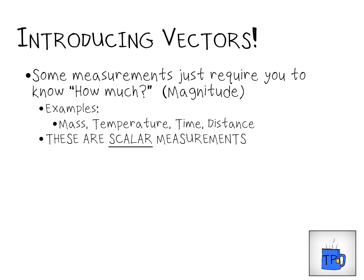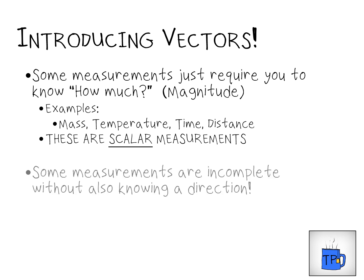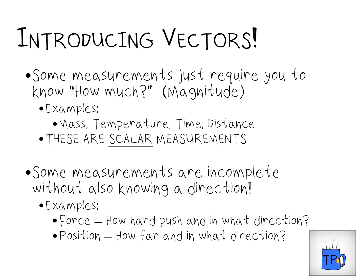However, as the previous example suggested, sometimes it's not enough to just know the measurement — you need additional information in the form of a direction. When we put a magnitude and a direction together, we get a new class of measurements. A force is an excellent example: if you know how hard you're being pushed, that's helpful, but it's critical to know in what direction. Someone pushing you towards the edge of a pool is very different from somebody pushing you away from the edge. So it's not just enough to know how far away something is — we often also need to know in what direction. That combination of how far and in what direction is our next term: position. These measurements that require both a magnitude and a direction are known as vector measurements.